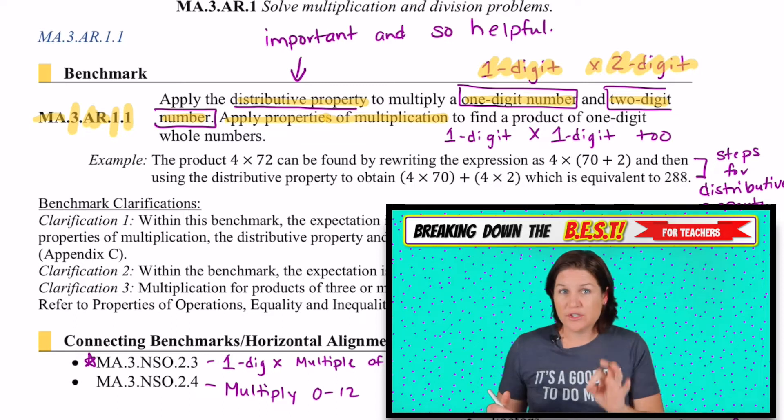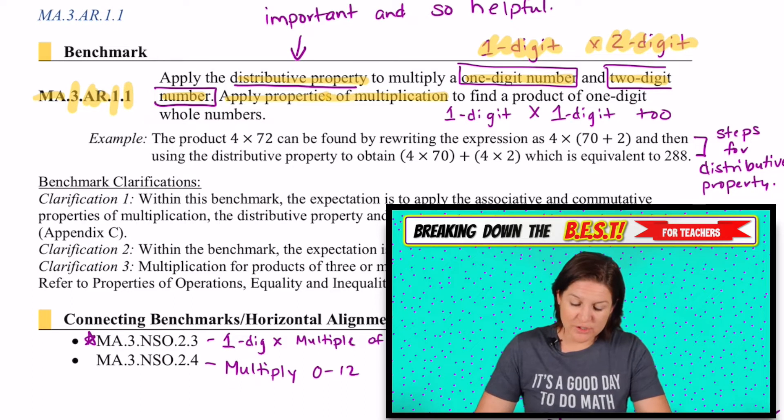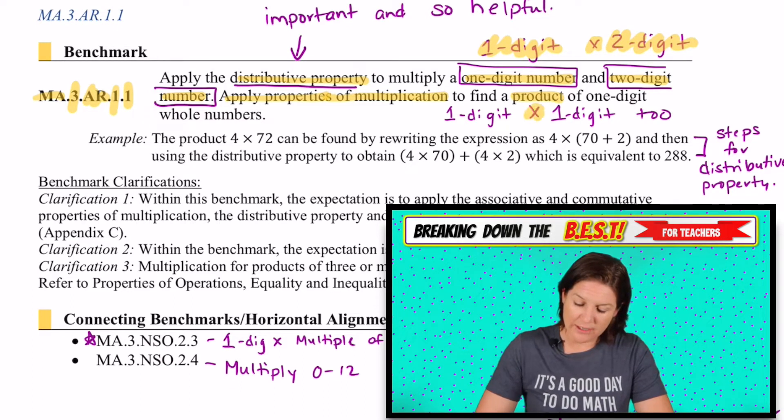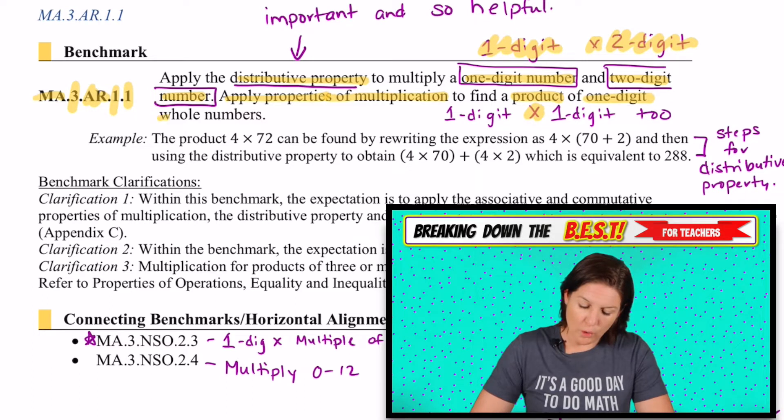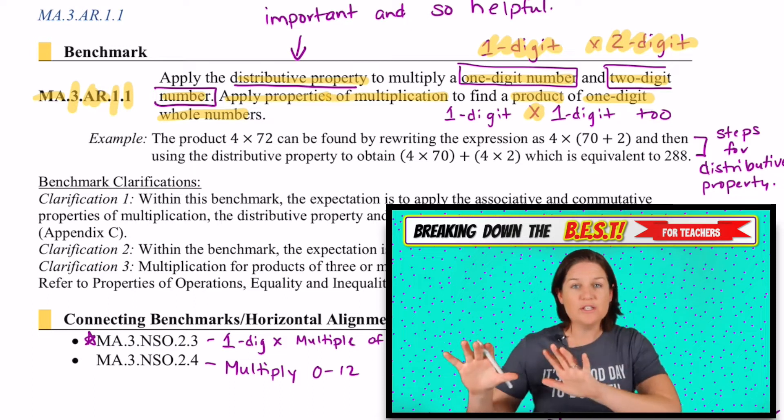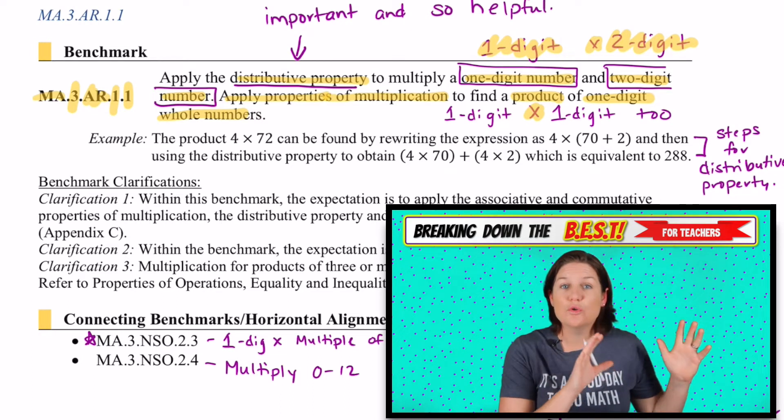Most of the focus is on the distributive property, but we need to showcase, we need to highlight the commutative property and the associative property whenever we can. So we'll apply those properties to multiplication to find a product, means that we're multiplying of one-digit whole numbers. So not only are we working with one-digit by one-digit, we are also going to be working with one-digit times two-digit numbers.